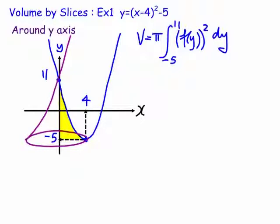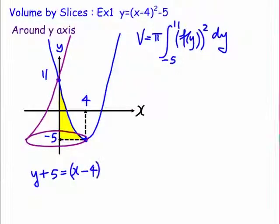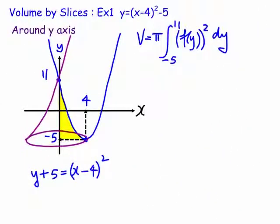But the problem now is that we need to rearrange this particular equation, so we'd have y plus 5 is equal to x minus 4 all squared. Then we take, now we're going to take the square root of both sides and make x a subject. Here we have x is equal to 4 plus or minus the square root of y plus 5.